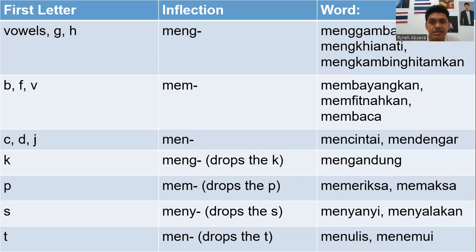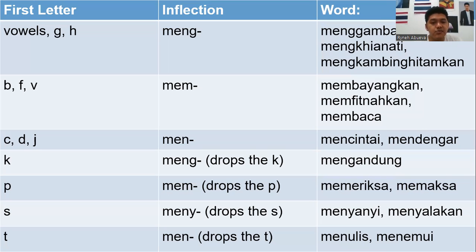The last inflection is men-, used when the prefix is combined with a root word where the first letter starts with t — the letter t is then dropped. For example, menolis — the root word is tulis — and manamui — the root word is tamu, meaning to be found or to meet — when combined with men-, the letter t is dropped.